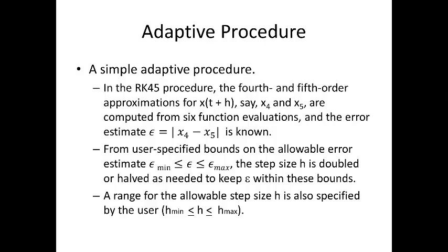So, we can also do a simple adaptive procedure. In the RK45 procedure, the fourth and fifth order approximations x of t plus h, say x4 and x5, are computed from the six function evaluations. The error estimate epsilon is equal to the absolute value of x4 minus x5 as known. From user specified bounds on the allowable error estimate, the step size h is doubled or halved as needed to keep epsilon within these bounds. And the range for the allowable step size h is also specified by the user. You'll need to set the bounds carefully, so that the adaptive procedures do not get caught in a loop trying repeatedly to halve and double the step size from the same point to meet error bounds that are too restrictive for the given differential equation.